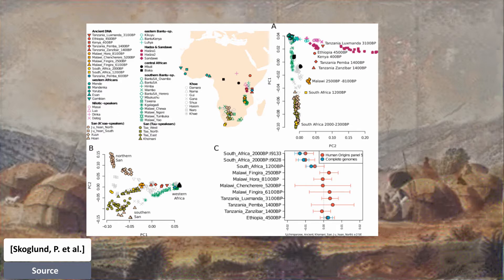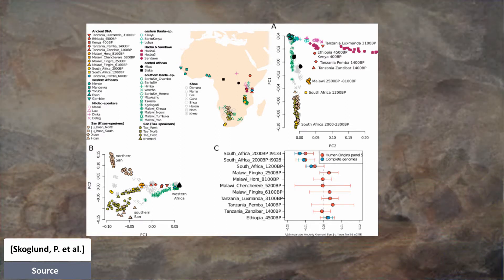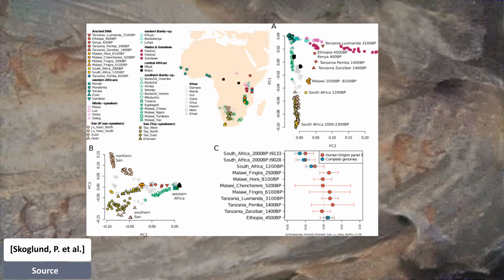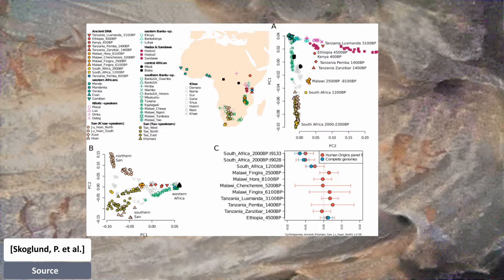The best fitting model for the Somali is a mixture of ancient Tanzanian pastoralist, Dinka-related, and Iranian-Neolithic-related ancestry. This suggests that ancestry related to the Iranian Neolithic appeared in Eastern Africa after the earlier gene flow related to Levant-Neolithic populations — a scenario made more plausible by genetic evidence of admixture of Iranian-Neolithic-related ancestry throughout the Levant by the Bronze Age and in ancient Egypt by the Iron Age.